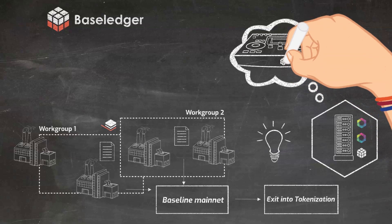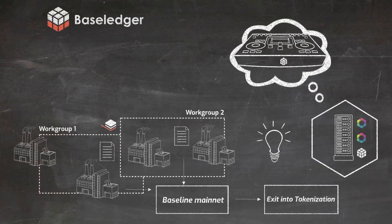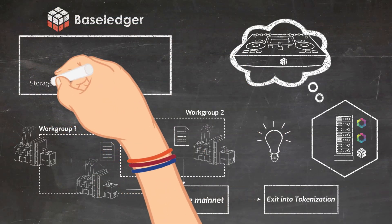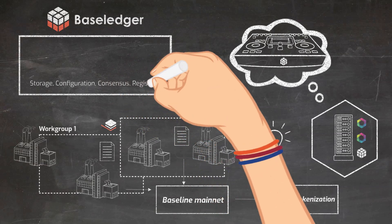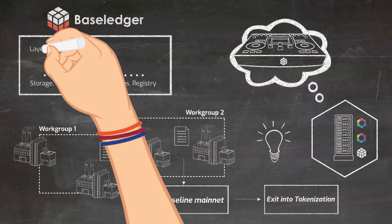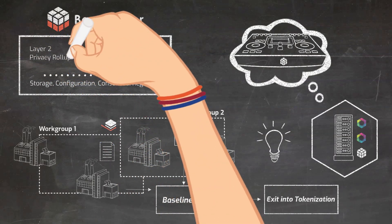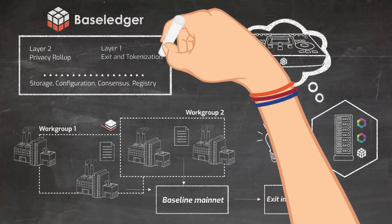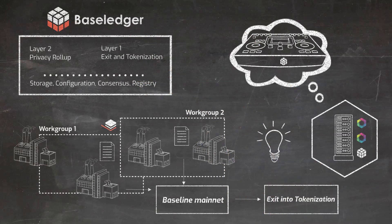Baseledger itself always acts as the underlying orchestration ledger to fulfill storage, configuration, consensus and registry tasks. It can serve as a layer 2 solution, and it can also be a simple layer 1 itself when it comes to just storing proofs. As soon as tokenization and DeFi is involved, it acts as an orchestrator — for example, for another layer 2 solution exiting into Ethereum.